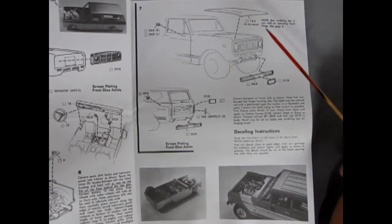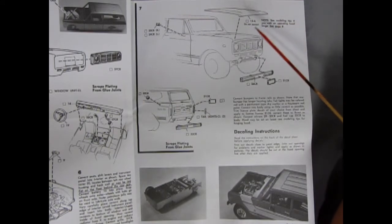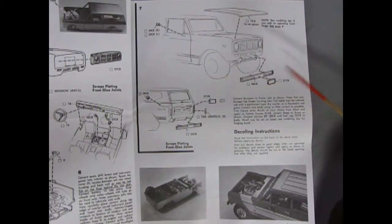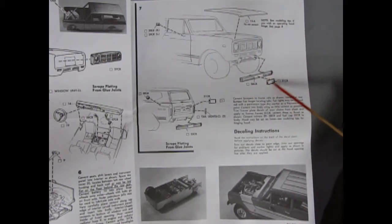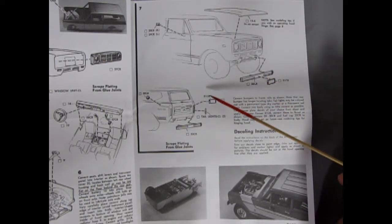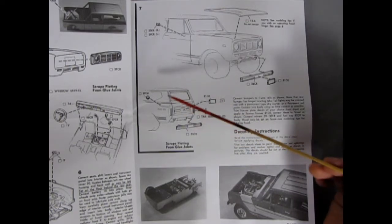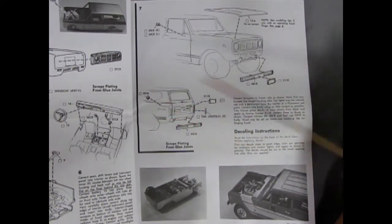And for panel seven we have the final bits of our International going together which is dropping the hood on, putting on our side mirrors, front bumper, license plate shroud, then in the back license plate shroud again, tail lights, rear bumper and the gas filler cap.